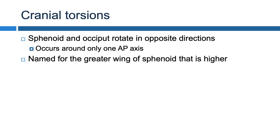The first in-depth cranial motion we'll talk about is a cranial torsion. By definition, a cranial torsion occurs when the sphenoid and occiput rotate in opposite directions, and this rotation occurs around a single AP axis. The way we name cranial torsions is for the greater wing of the sphenoid that is higher, or superior. If the sphenoid is higher on the right, it's a right cranial torsion; if the greater wing of the sphenoid is higher on the left, it will be a left cranial torsion.